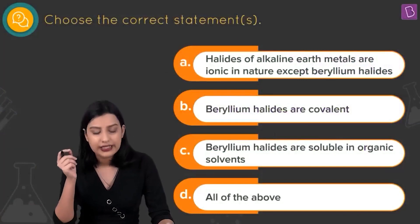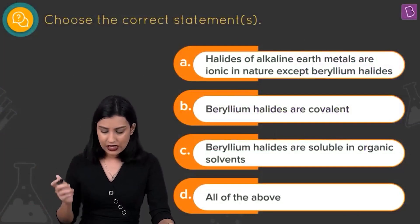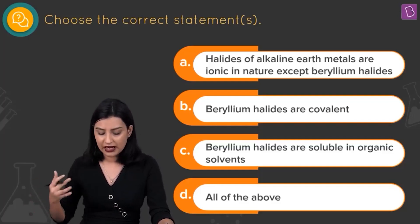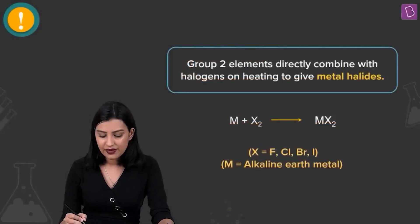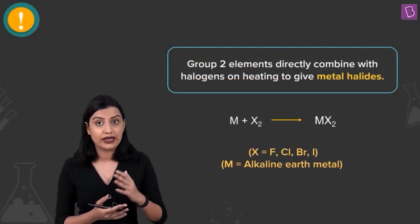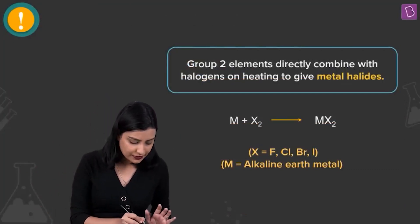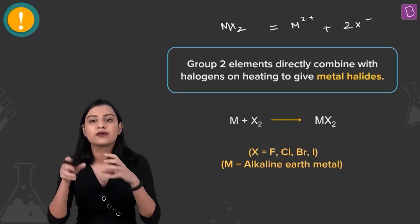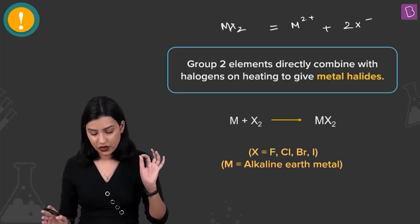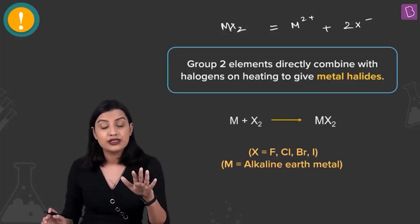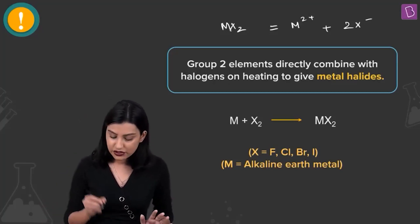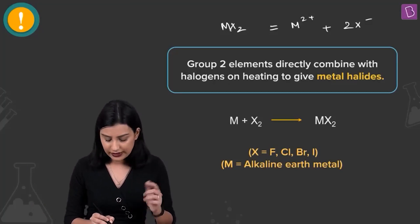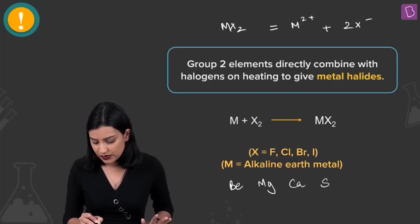Here they're asking to choose correct statements about alkaline earth metal halides. Option A says halides of alkaline earth metals are ionic except beryllium halides. Option B says beryllium halides are covalent. Option C says beryllium halides are soluble in organic solvents. All alkaline earth metals form ionic halides with formula MX₂ — M²⁺ and 2X⁻ — except beryllium.